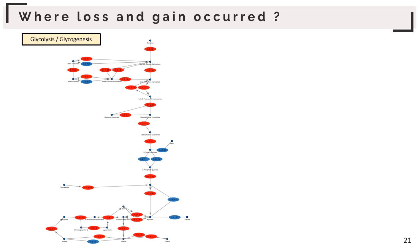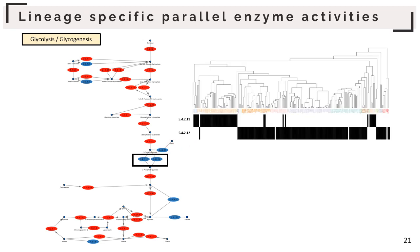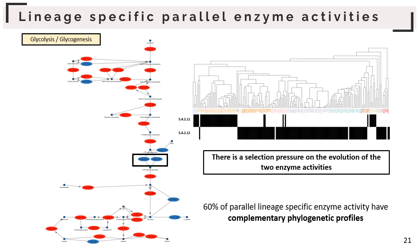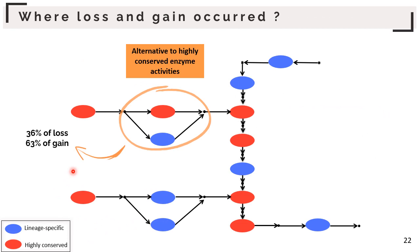Then we tried to understand where loss and gain mostly occur within metabolic pathways. For example, in the glycolysis pathway, we have a lineage-specific enzyme activity alternative to another lineage-specific enzyme activity. The risk is some species may lack both activities and break the pathway. But looking at the phylogenetic profiles, species lacking the first enzyme activity possess the second one. So there is a selection pressure to keep one path available. In 60% of cases with parallel lineage-specific enzyme activities, we always have complementary phylogenetic profiles.